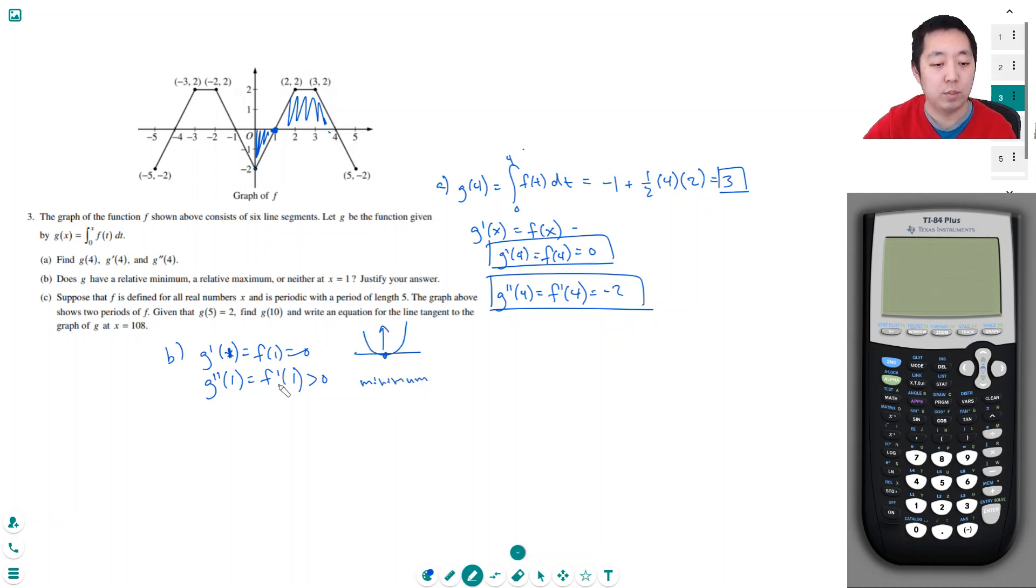Suppose that f is defined for all real numbers x and it's periodic with a period length 5. So that means this just repeats over and over. I think the graph above shows two periods of f.